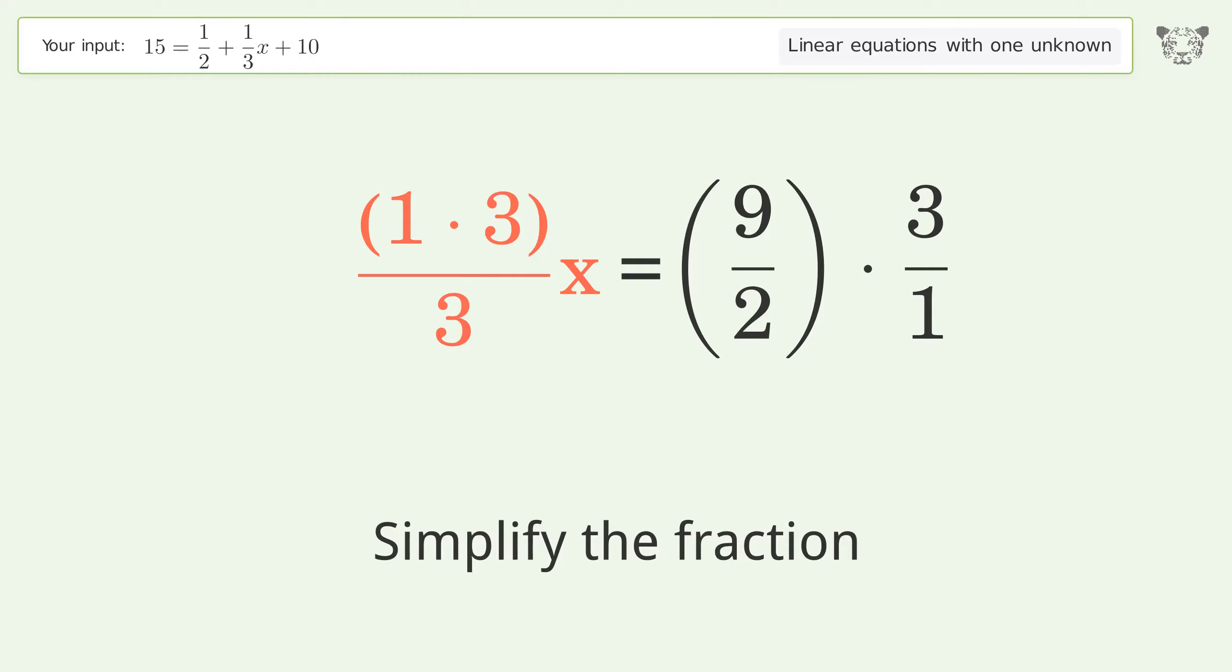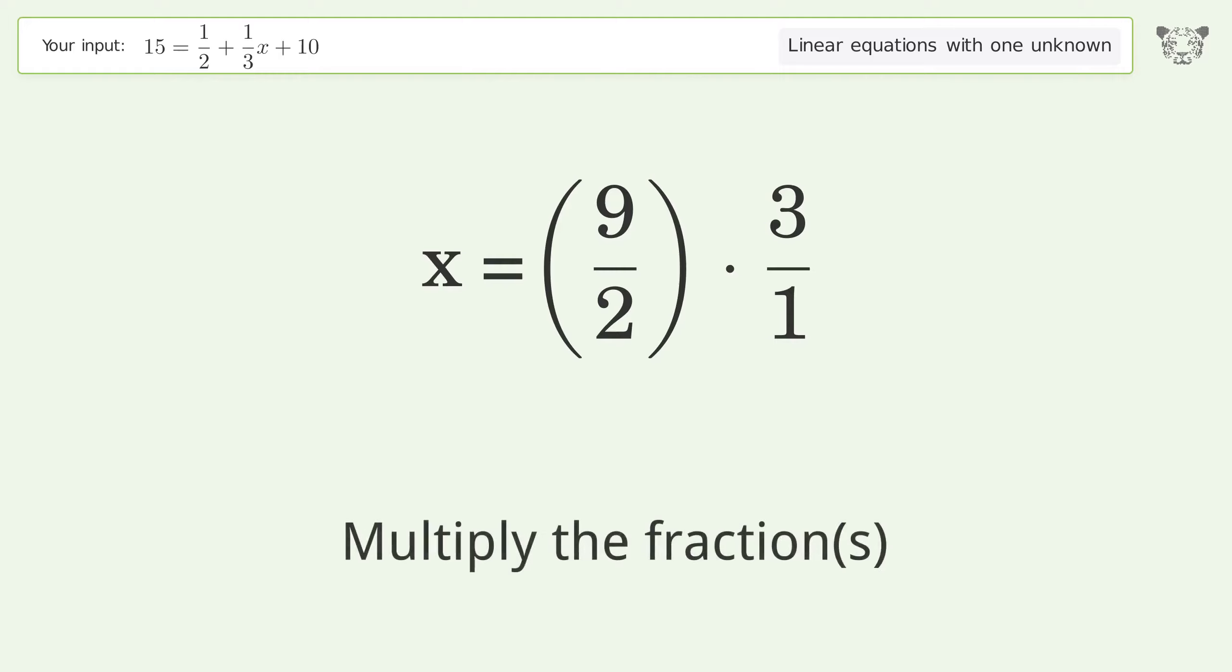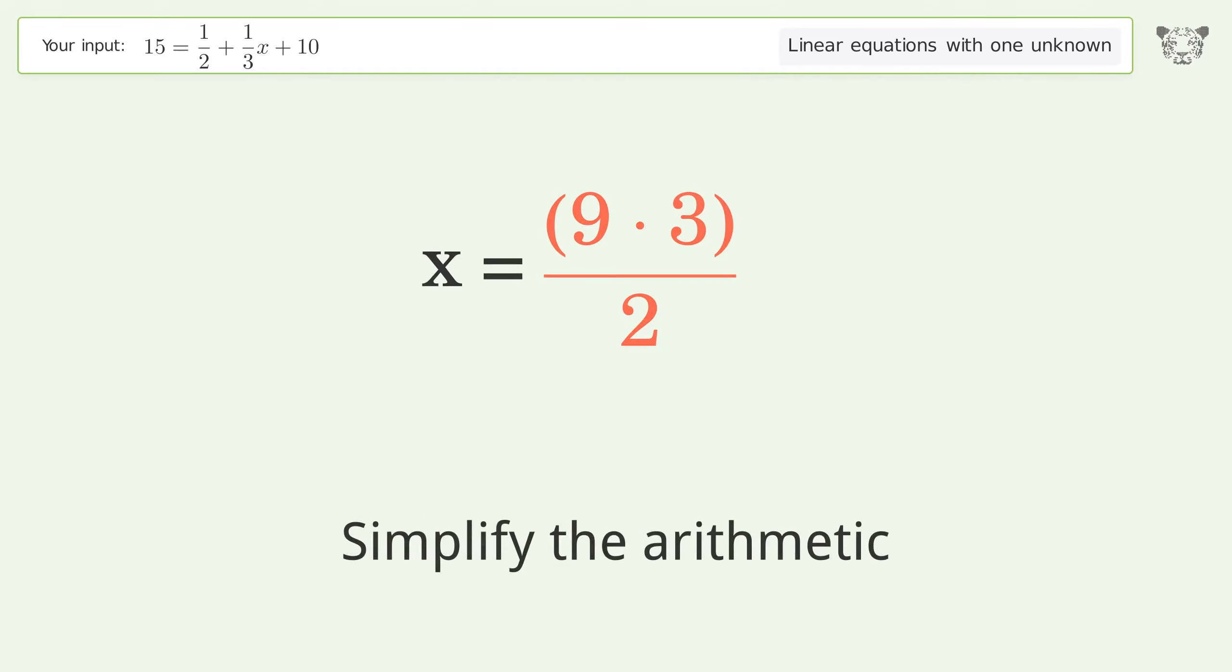Simplify the fraction. Multiply the fractions. Simplify the arithmetic. And so the final result is x equals 27 over 2.